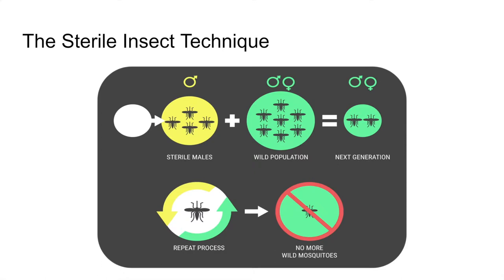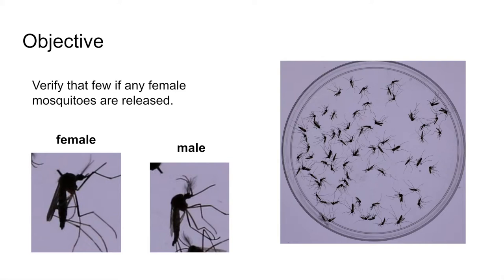The primary challenges to a successful SIT program are releasing enough mosquitoes and limiting those releases to males, since only the females bite and transmit disease.